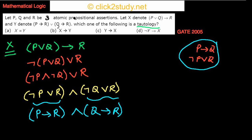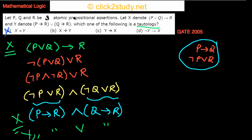So this is what X is, and this is what Y is. The only difference is that X has 'and' between the two parts, while Y has 'or.' So X is definitely not equivalent to Y, since the connective differs. But can we say X implies Y?